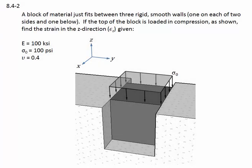Problem 8.4-2. A block of material just fits between three rigid, smooth walls, one on each of two sides and one below. If the top of the block is loaded in compression, as shown,